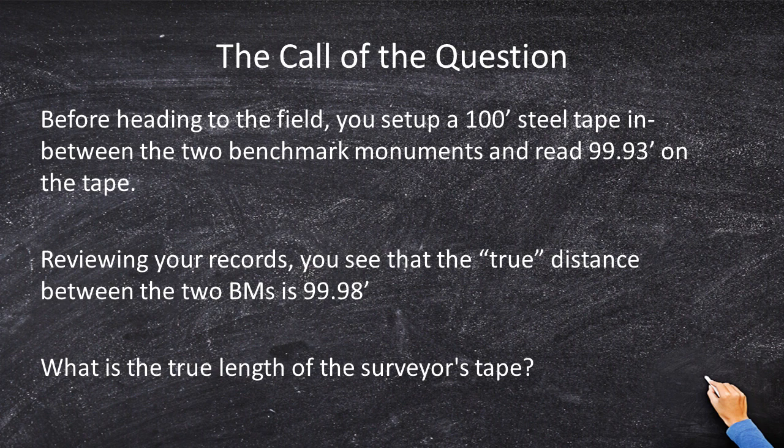Before heading to the field you set up a 100 foot steel tape between two benchmarks. The steel tape reads 99.93 feet. Reviewing your records you see that the true value between the benchmarks is 99.98, so essentially your tape is reading five hundredths of a foot short.